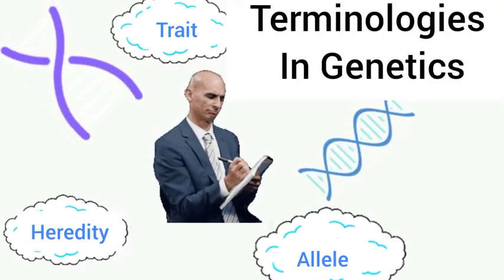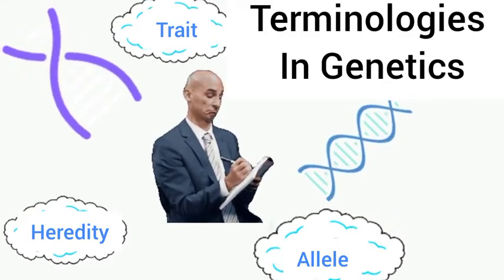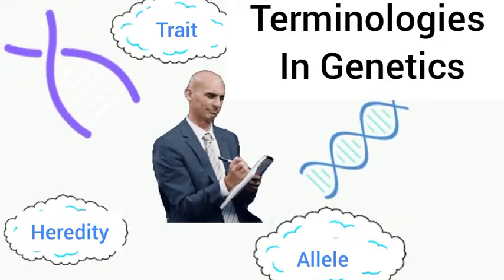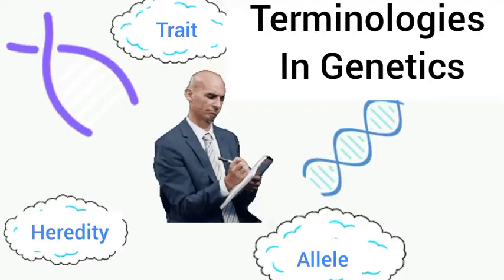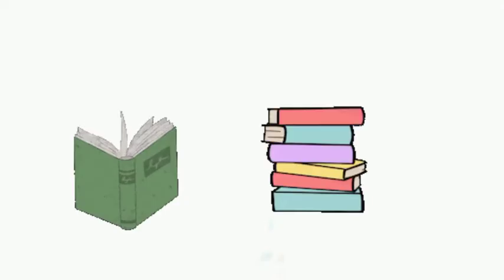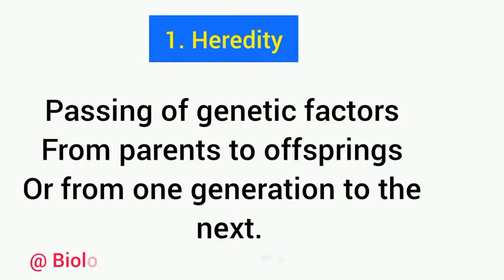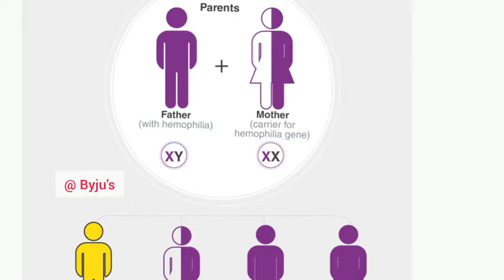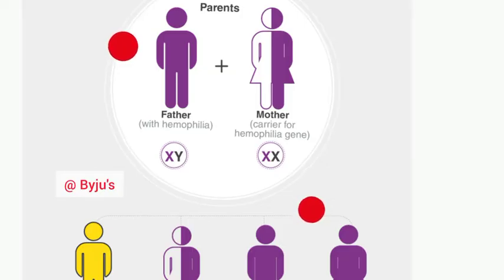Welcome once again to my class. Today we are going to be looking at terminologies in genetics — some key words you need to know when studying genetics. The first is heredity: it is simply the passing of genetic factors from parents to offspring, or from one generation to the next. Look at this picture carefully — the father is affected with hemophilia and has successfully passed down this trait to two of his offspring in the next generation.